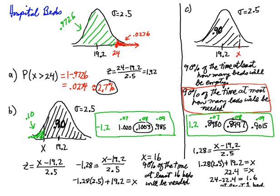Part C is a little tricky — you might have to think about it. The phrases 'at least' and 'at most' when working with distributions can be confusing, so be careful. Comparing B and C: one problem is on the lower end of the distribution and the other is symmetrically the same distance on the upper end. Our Z-scores are symmetrical opposites: negative 1.28 on the lower end with 10%, and positive 1.28 on the upper end with 90%.